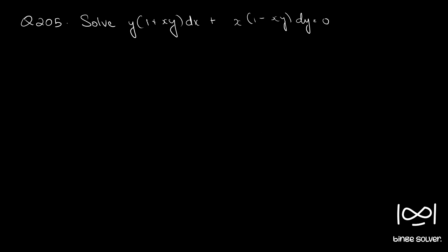Question 205. Solve y(1 + xy)dx + x(1 - xy)dy = 0.